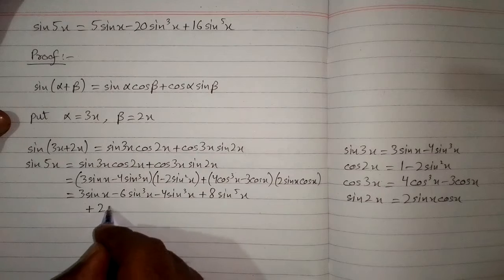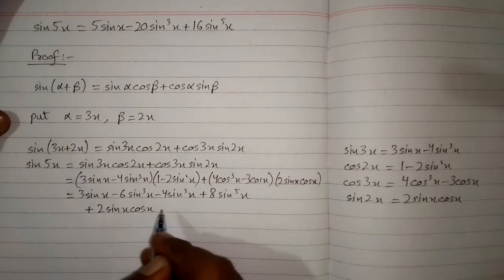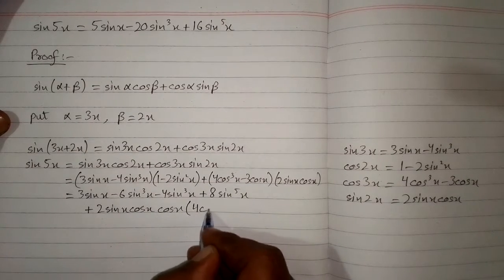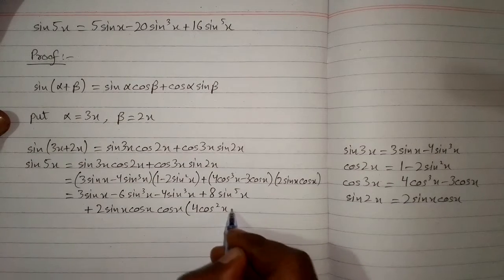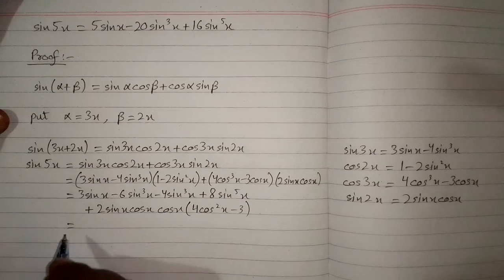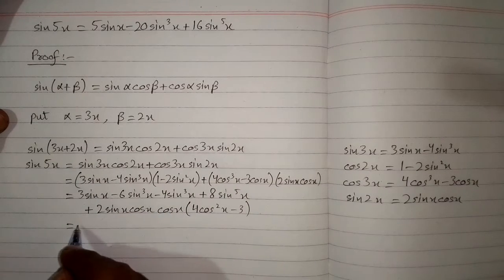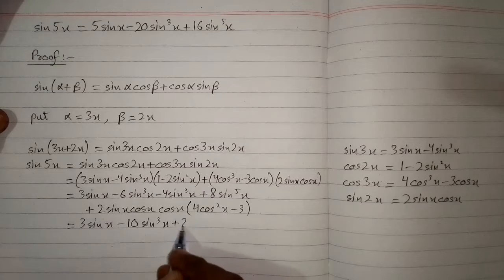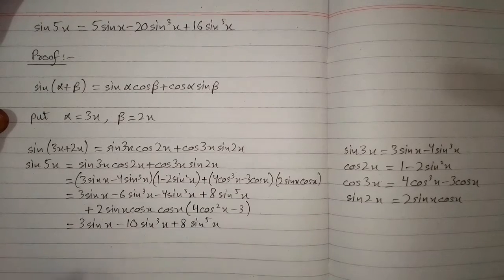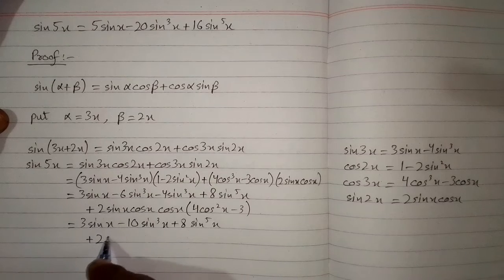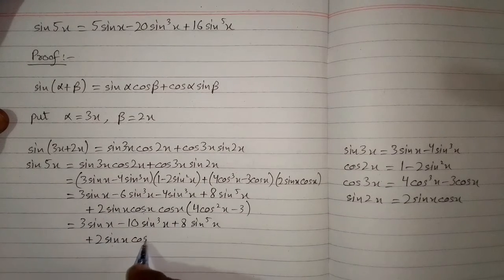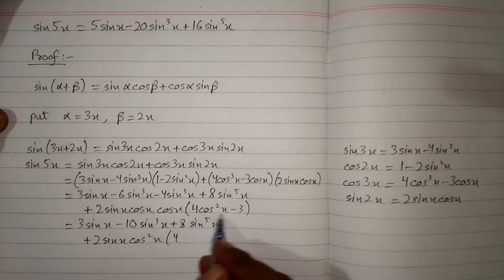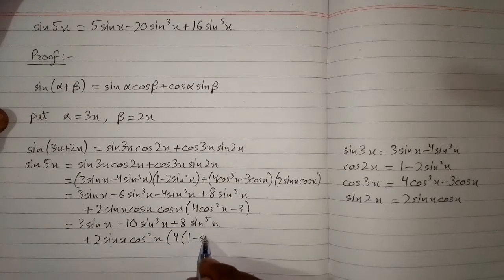For the second part, we write 2 sine x cos x, and from the bracket we take cos x common, giving 4 cos squared x minus 3. Now minus 6 sine cubed x minus 4 sine cubed x, plus 8 sine to the power 5x, plus 2 sine x, and cos x multiplied by cos x is cos squared x. Then 4 times cos squared x, where we can substitute cos squared x = 1 minus sine squared x.